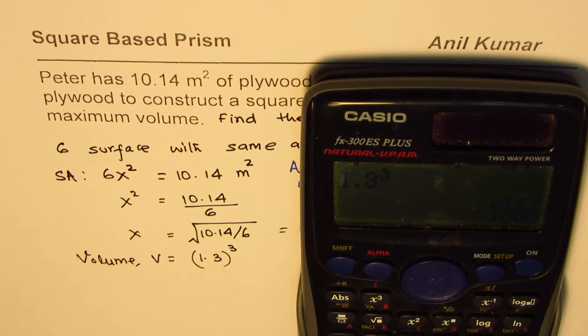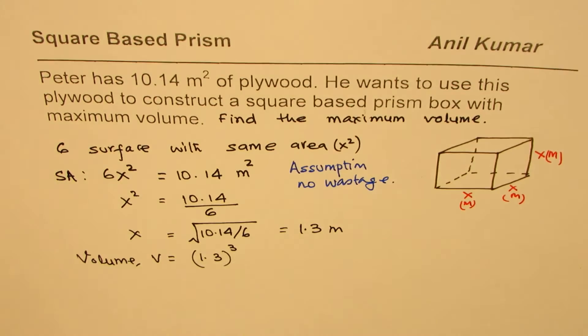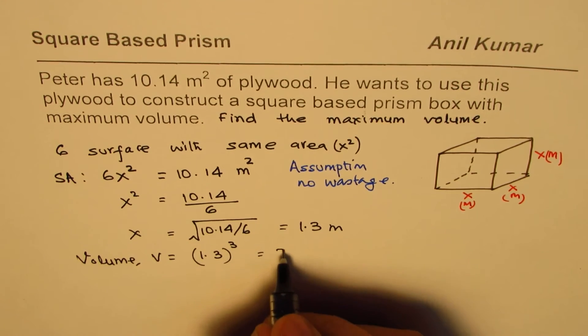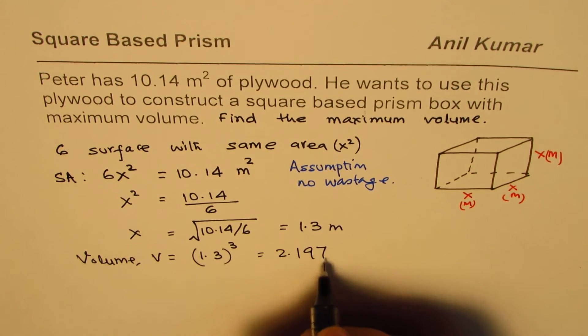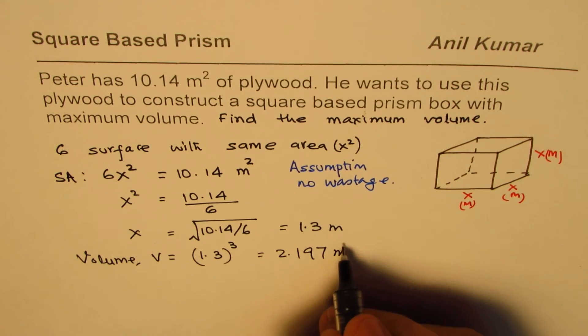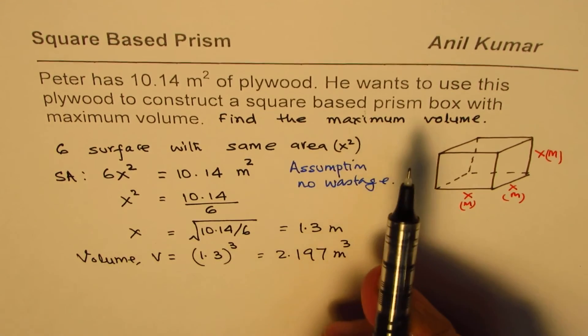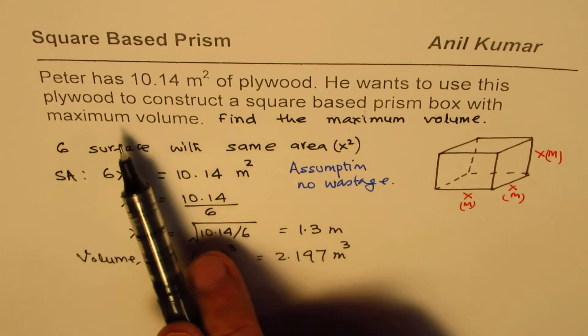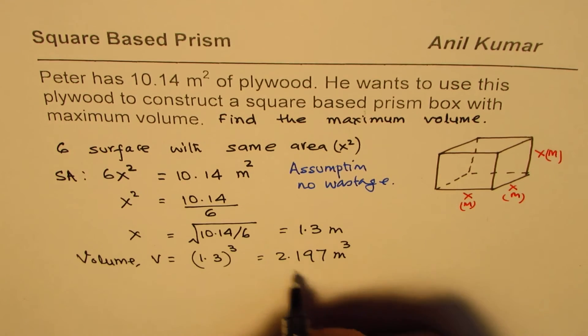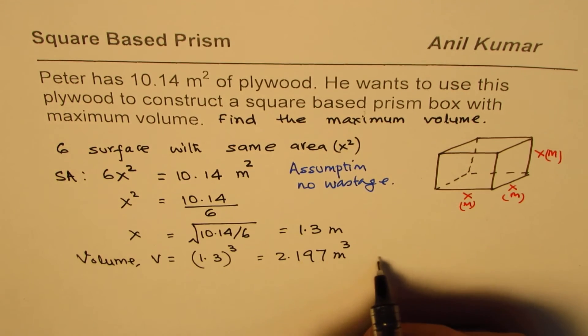Let's find the cube of this: 1.3 cubed equals 2.197 in decimals, so it is 2.197 cubic meters.